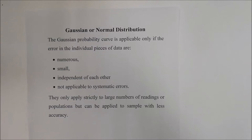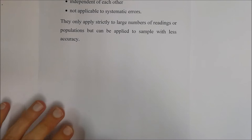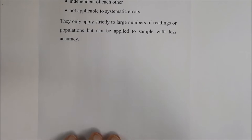These curves apply strictly to large numbers of readings or populations, but can be applied to smaller datasets with less accuracy. When doing statistics and trying to identify how good a reading is, the more data you have the better. For example, determining the average age of a population from 100 people gives a better result than from just two people. You generally want as much data as possible.